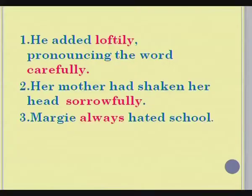In that reading, you have come across certain sentences that I am going to show you now. 'He added loftily,' pronouncing the word carefully. 'Her mother had shaken her head sorrowfully. Margie always hated the school.' Now, you read the sentences once again concentrating on the red colored words. How did he add? He added loftily — it means in a superior way. How did the mother shake her head? She shook her head sorrowfully. All of these words tell us how the actions have taken place.